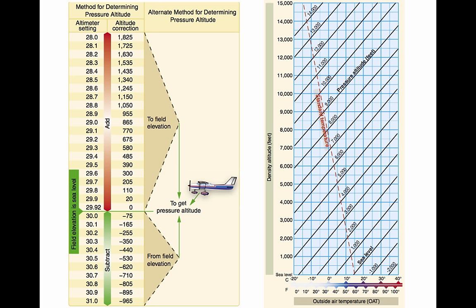The more appropriate term for correlating aerodynamic performance in a non-standard atmosphere is density altitude — the altitude in the standard atmosphere corresponding to a particular value of air density. Density altitude is pressure altitude corrected for non-standard temperature. As the density of the air increases, lower density altitude, aircraft performance increases. Conversely, as air density decreases, a higher density altitude, aircraft performance decreases. A decrease in air density means a high density altitude; an increase in air density means a lower density altitude.